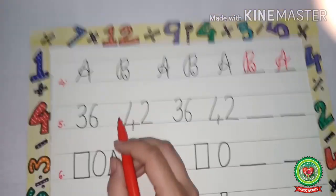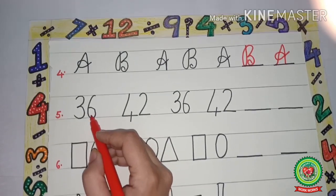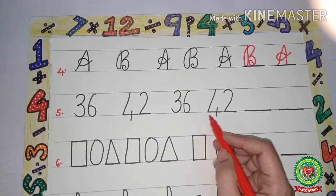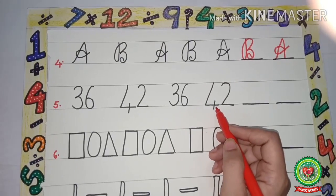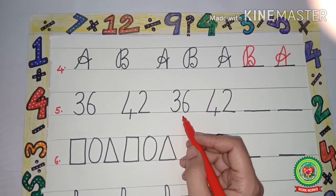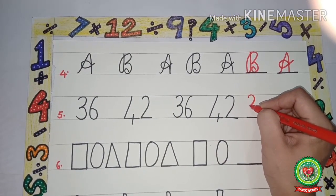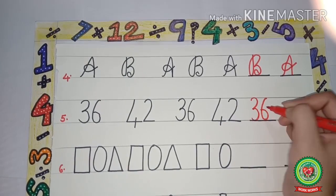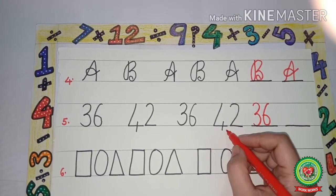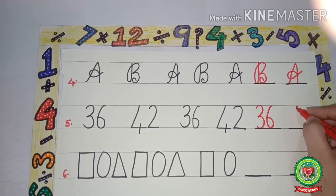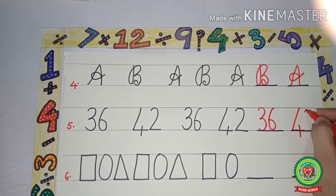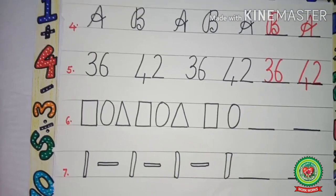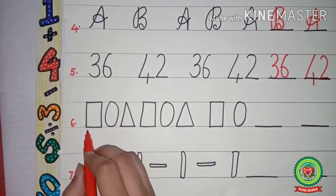Let's complete one more pattern: 36, 42, 36, 42. Now we will see what is coming after 42 — 36 — so we will write 36. And now what comes after 36 — 42 — so we will write 42. See, the patterns are very easy.